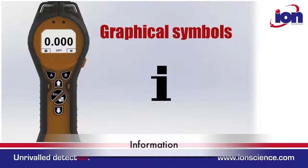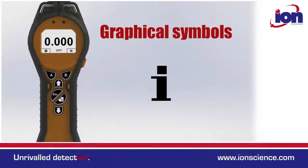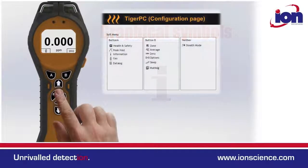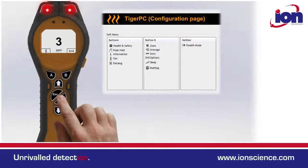Information: this is where various useful bits of information are kept, like alarm levels and the type of gas you have selected. To switch off, simply press and hold the enter key.